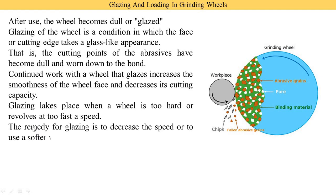The remedy for glazing — the solution to avoid glazing of the grinding wheel — is to increase the speed of the grinding wheel or to use softer materials.